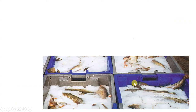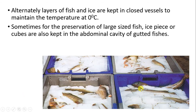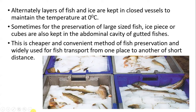Ice is the best material used in fish preservation. In containers, the first layer of ice is placed, then a layer of fish, then ice again, then fish — alternate layers of fish and ice are kept in closed vessels so that zero degree Celsius temperature is maintained. For large size fish, ice pieces or ice cubes are inserted into the abdominal cavity through the mouth so that both the outside and inside of the fish body maintain zero degree Celsius.